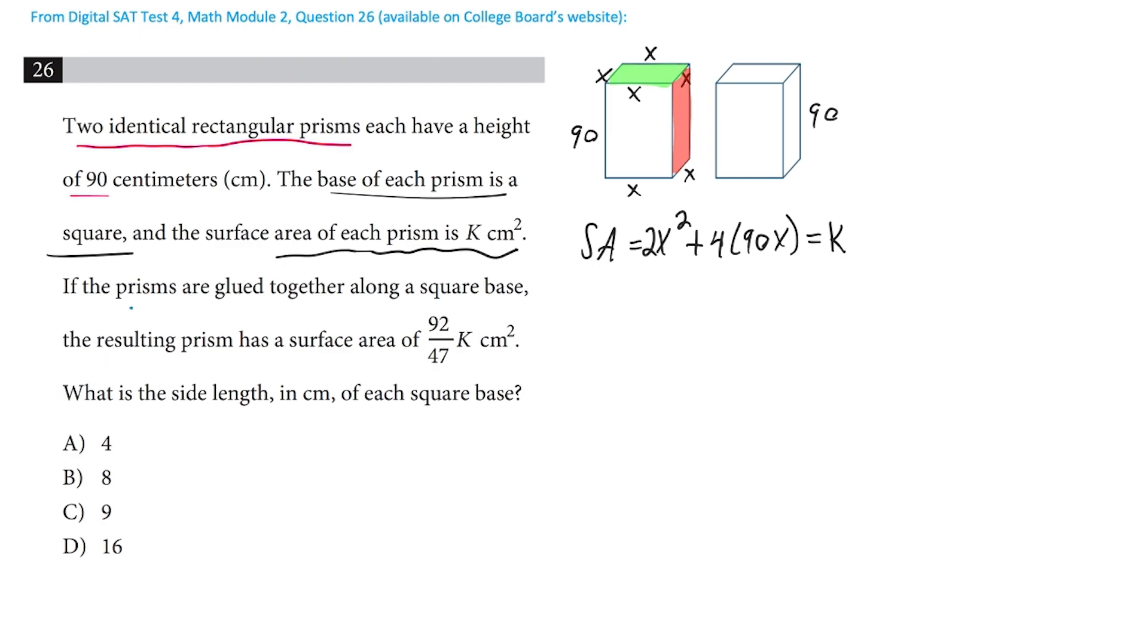The question then says we're going to glue these together along a square base. So just imagine we take the first one and put it on the bottom, and the second one stacked right on top of it, and we're going to get one bigger shape. We're stacking it vertically because the square base, the green part, is where they had to be glued together.